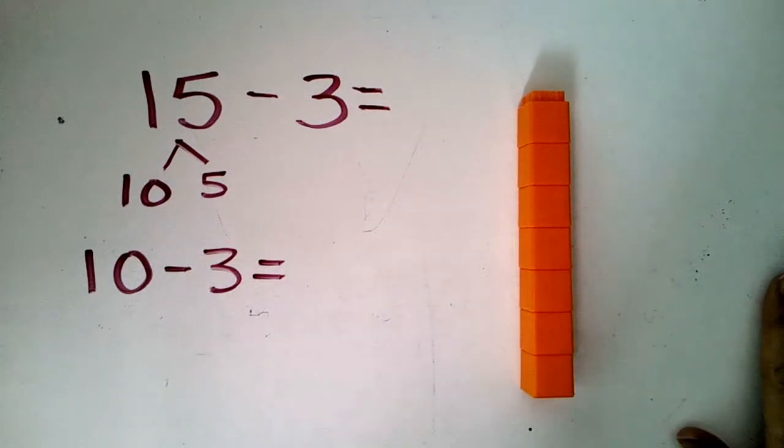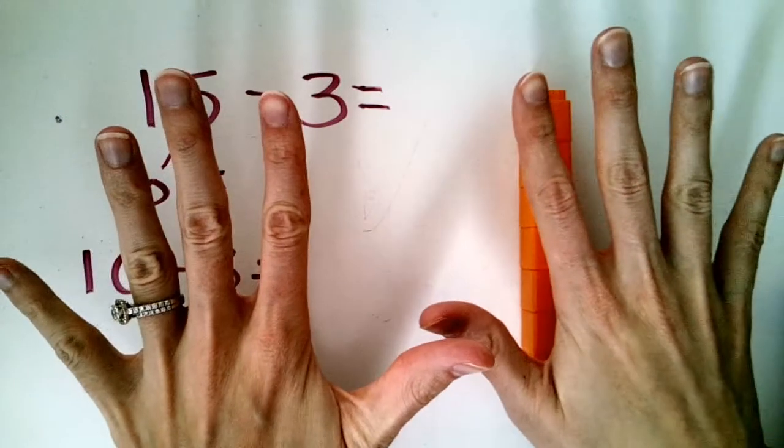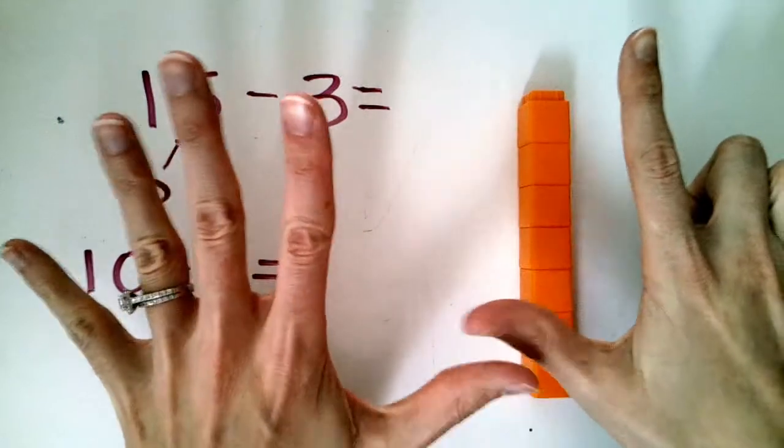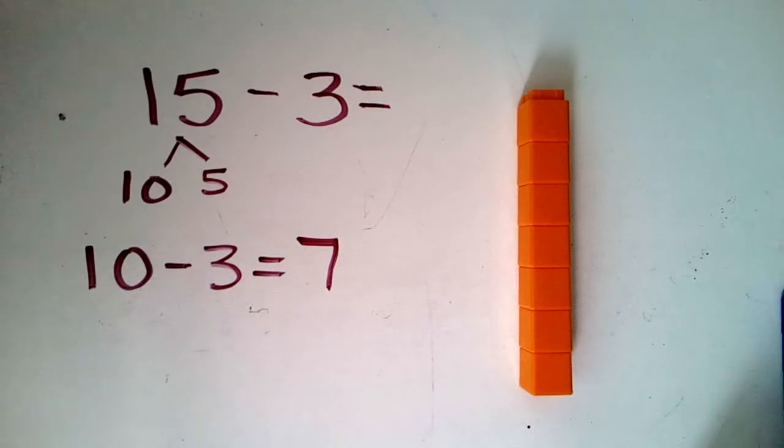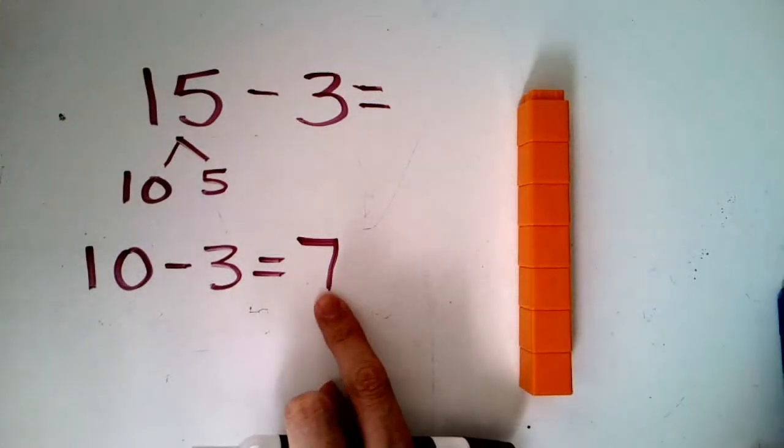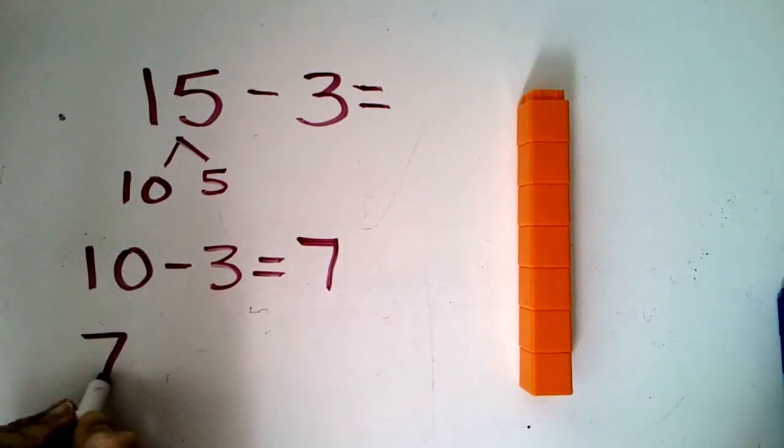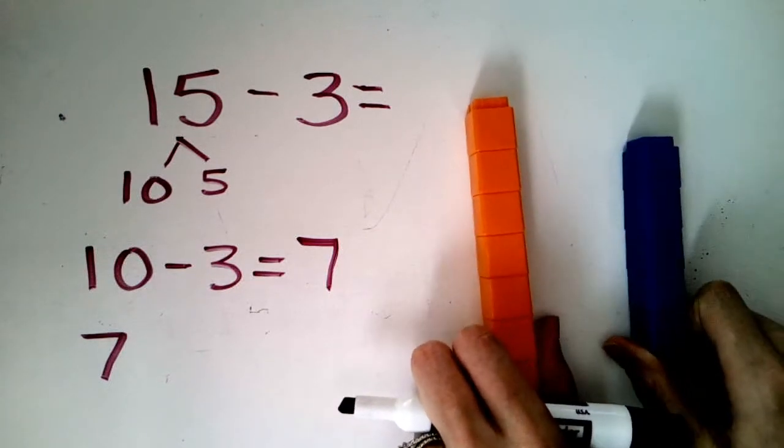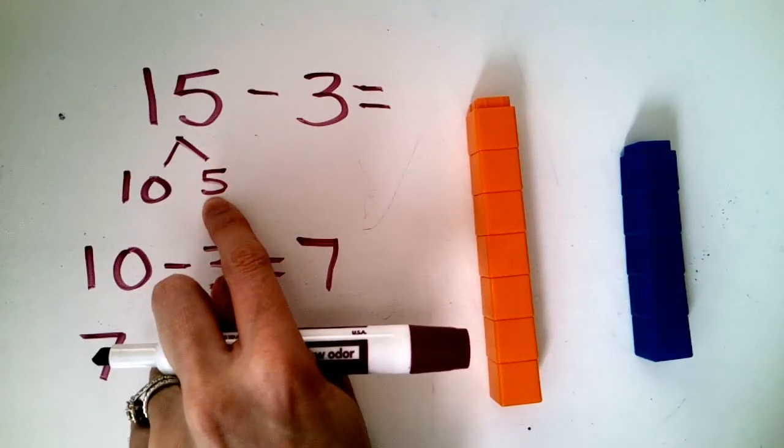Since boys and girls, you don't always have unifix cubes next to you, use your fingers. 10, take away one, two, and three. You have seven fingers still up. So, there's part of it. Now, we take our answer, just like when we make a 10 and adding. We're always going to take this first answer and we're going to make it travel down here. Now, don't forget, I have the seven, but I still have this guy here too, right? My blue ones that were the five in 15.